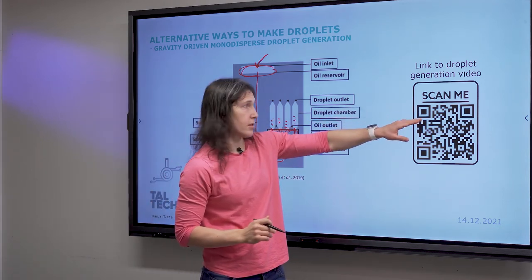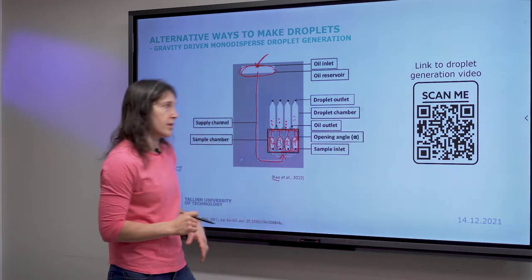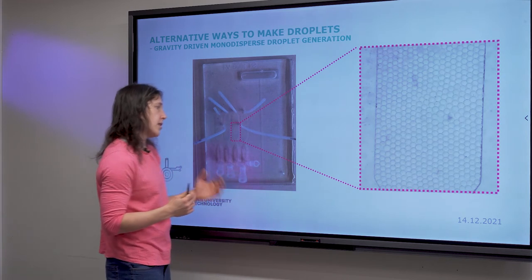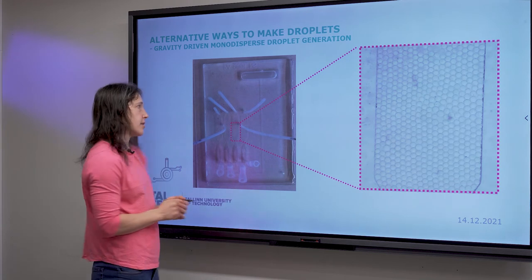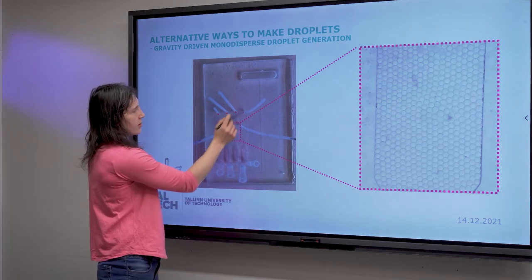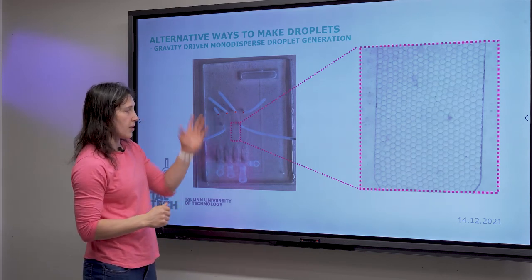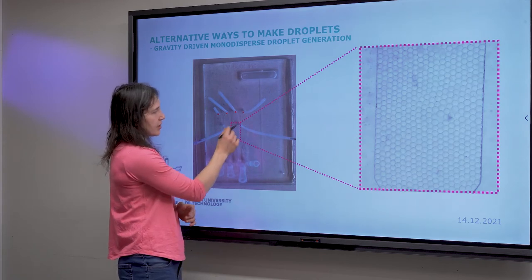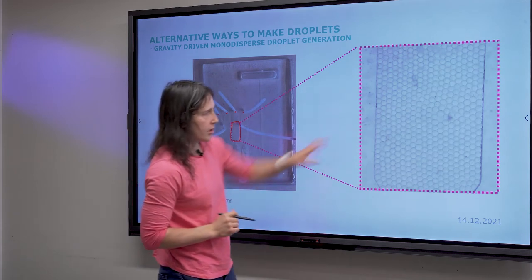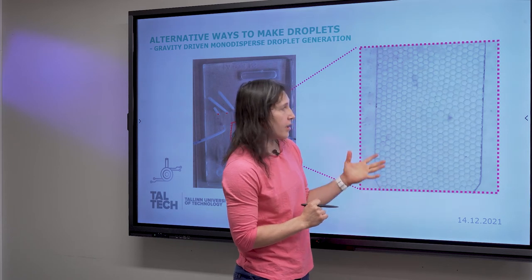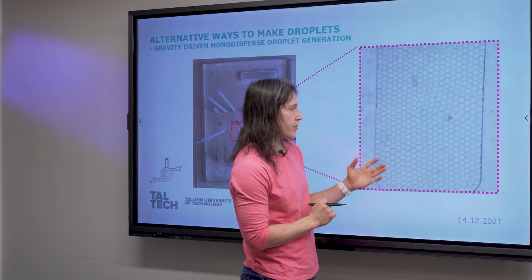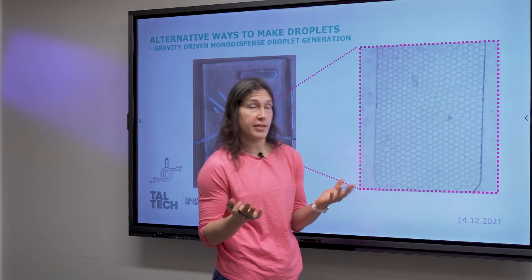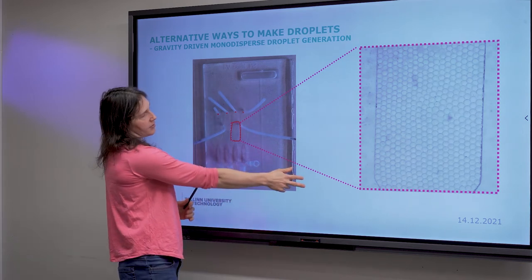A very nice video is available from the author if you follow the QR code. We also replicated this method in our lab. After droplet generation, these tubes are used to close the chip and make sure the droplets don't come out — just a very basic way to close the chip quickly. Looking a little closer at one of these regions, you can see the droplets are quite uniform. There is a little bit of size variation, but you have formed nice droplets just by using gravity.